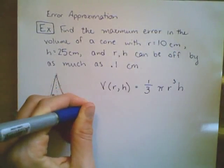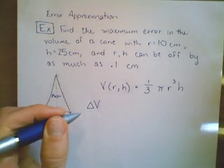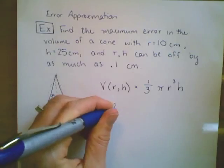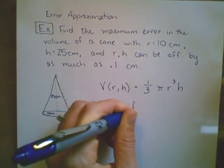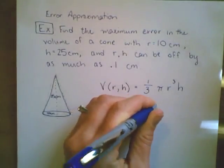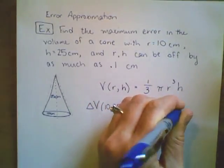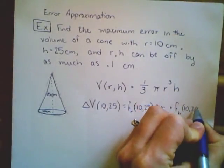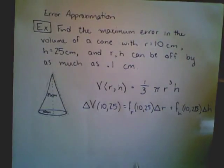We're going to use our linear approximation. The maximum error, abbreviated by our change in volume, where r equals 10 and h equals 25, is given by the partial derivative with respect to r at (10,25) times the maximum error in r, plus the partial derivative with respect to h evaluated at (10,25) times the maximum error in h.